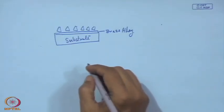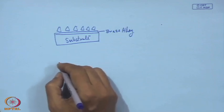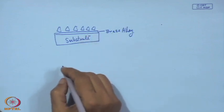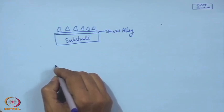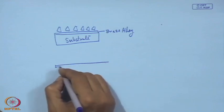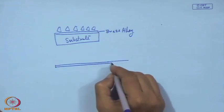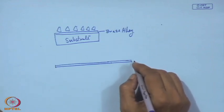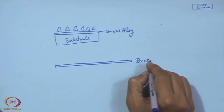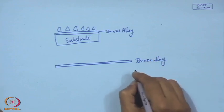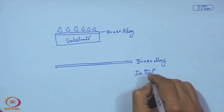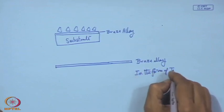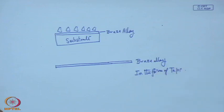The idea would be to have this braze alloy not in the form of a paste, but as an innovative technology where we must have a strip — just like a tape. This tape of the braze alloy may be a suitable plastic bonded tape, and it can also be an adhesive tape.